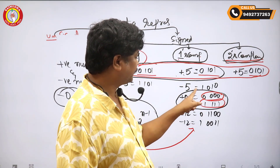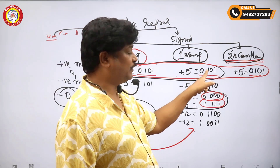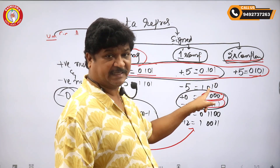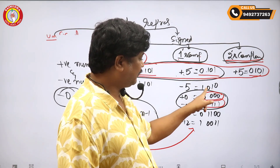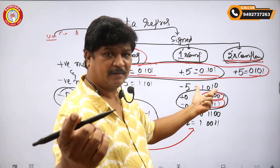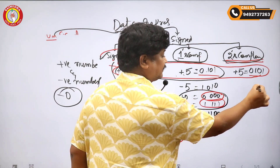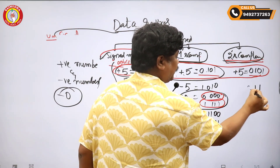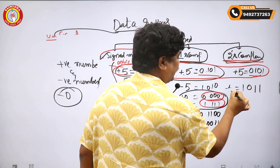So, for minus 5: this is already the positive number, you made a one's complement for this. Then adding one to that automatically gives the two's complement: 1, 1, 0, 1 — which is equal to minus 5.